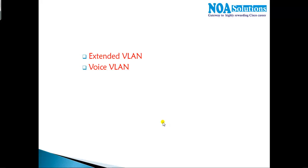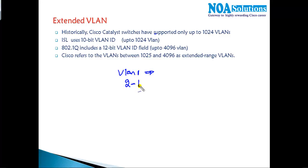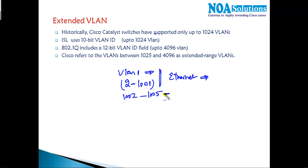In this video we'll discuss two different kinds of VLANs: extended and voice VLAN. With the standard VLAN concept, VLAN 1 is the default VLAN and we can create VLANs from 2 to 1001 — these are Ethernet VLANs used for Ethernet-based networks. We also have VLANs from 1002 to 1005, which are used for FDDI and Token Ring networks. The default limitation of VLANs is 1024.